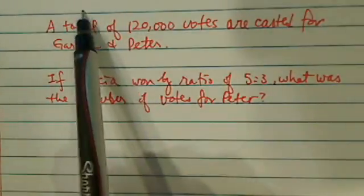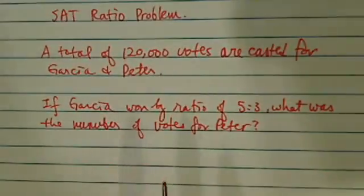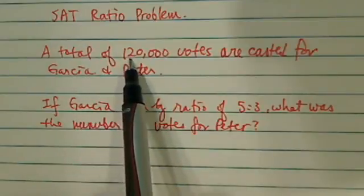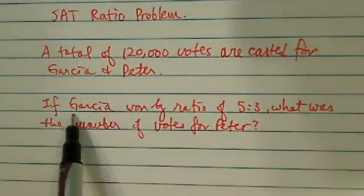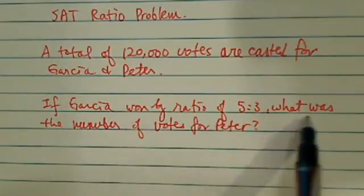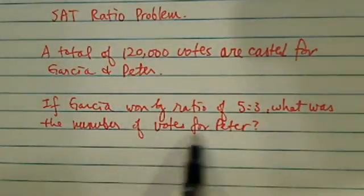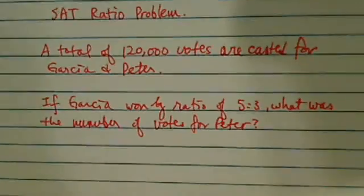Today we have a very interesting SAT ratio problem here. A total of 120,000 votes were casted for two candidates. If Garcia won by ratio of 5 to 3, and they want to know what number of votes was casted for Peter.